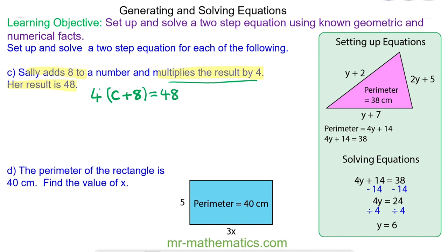And this is a multiplication by 4. We're going to do the opposite of times by 4 which is dividing by 4. We're doing this to both sides to keep it balanced. So C add 8 will equal 12. We'll do the opposite of adding 8 which is taking away 8. So C will equal 12 take away 8 which is 4.